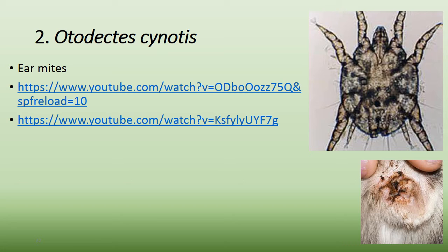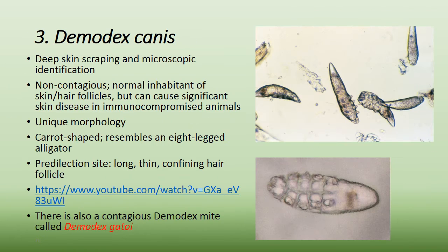Otodectes cynotis are ear mites. They produce what looks like coffee grounds in the ear — that's the typical appearance in cats and dogs. You take a cotton swab, swab out the ear, smear it onto a microscope slide, and view it under the microscope to confirm the diagnosis.